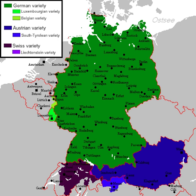Standard German differs regionally. The most accepted distinction is between different national varieties of Standard German: Austrian Standard German, German Standard German, and Swiss Standard German. Additionally, there are linguists who posit that there are different varieties of Standard German within Germany. Linguistic research of the different varieties of Standard German began for the most part only in the 1990s, especially in Austria and Switzerland.